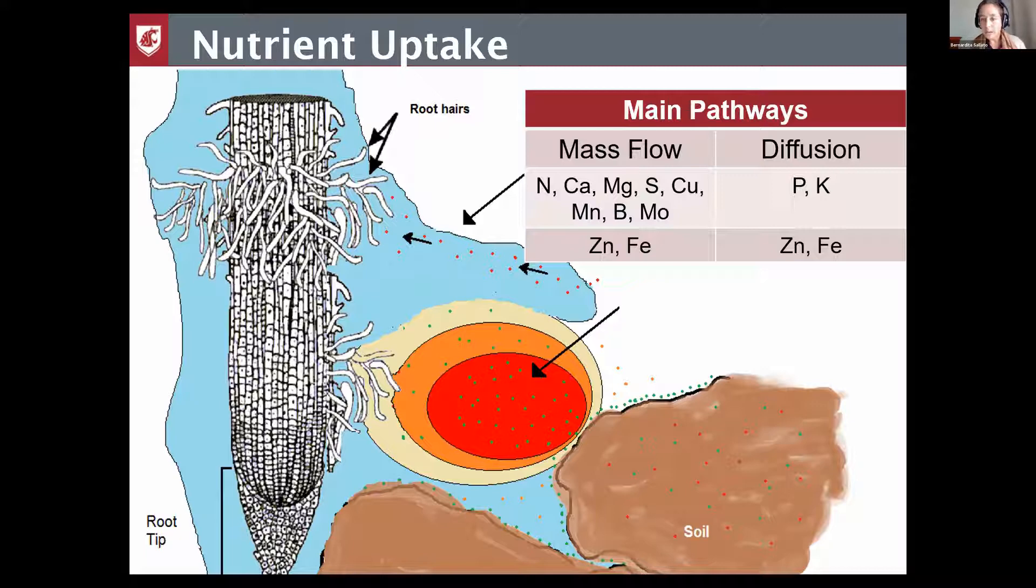Other nutrients that are in very high demand are potassium and also phosphorus. Those two are moving into the root zone through diffusion. I draw it as a circle from high concentration around the roots to the roots, from high concentration to lower concentration. So the roots are always uptaking these nutrients and reducing that concentration around the root zone. Again, diffusion also needs moisture in the soil. And there are other elements like zinc and iron that they move in both ways, mass flow and diffusion.